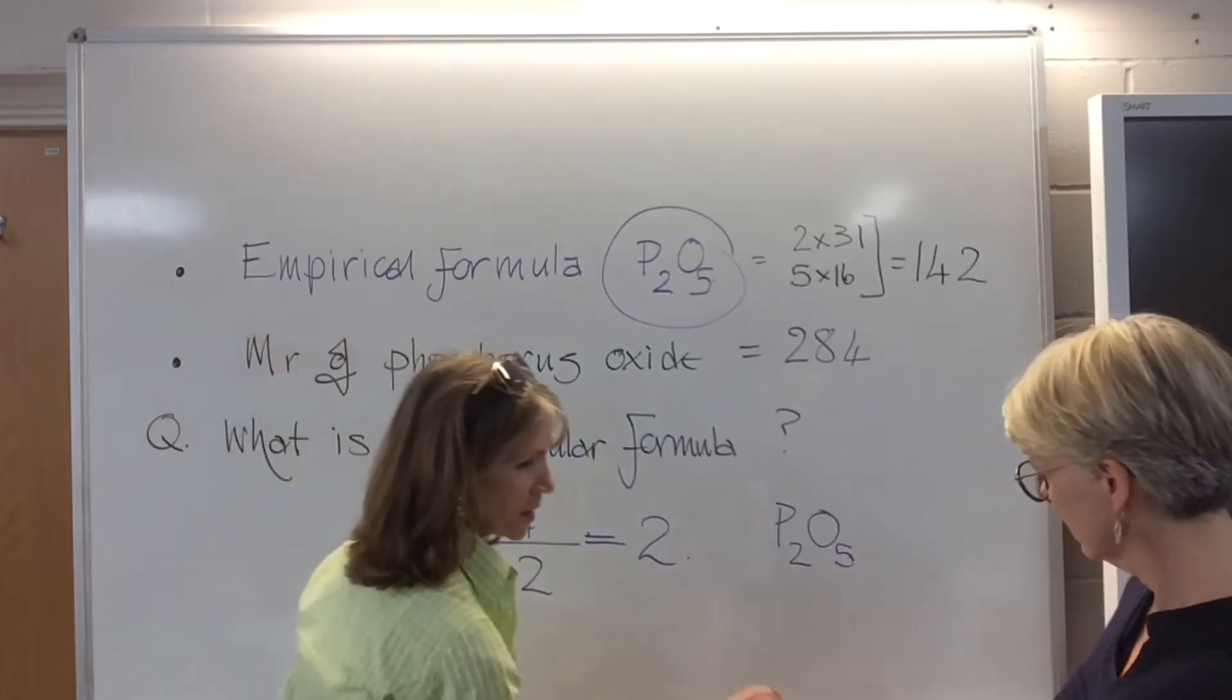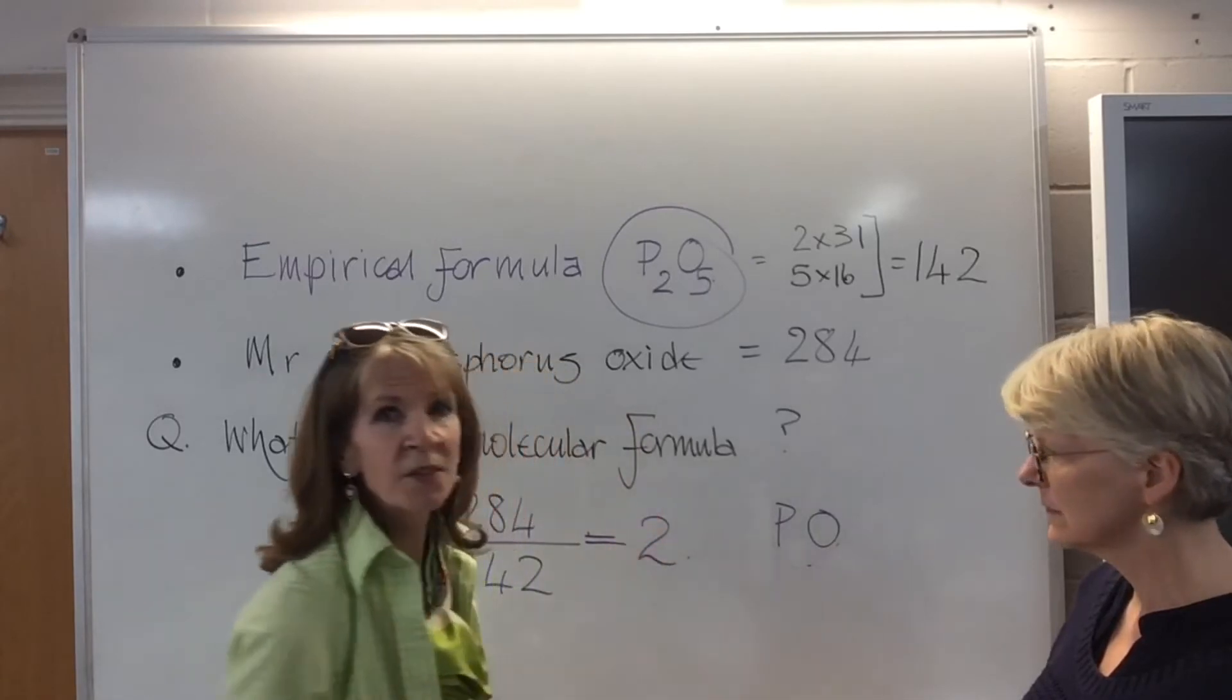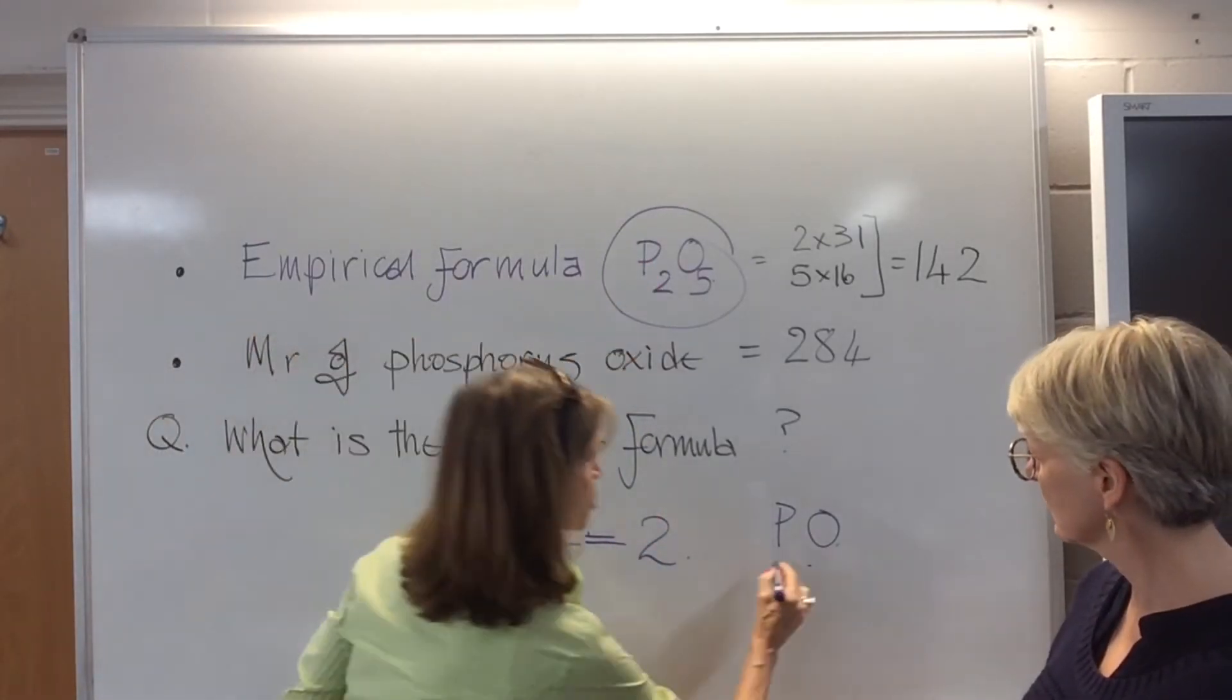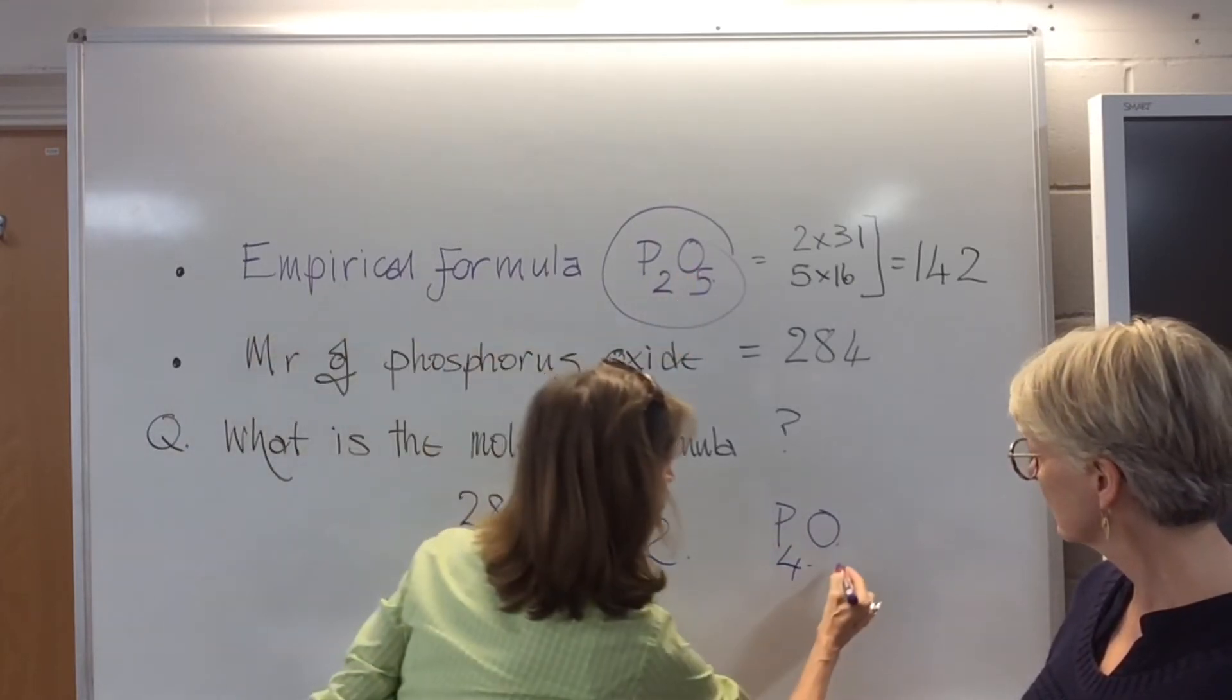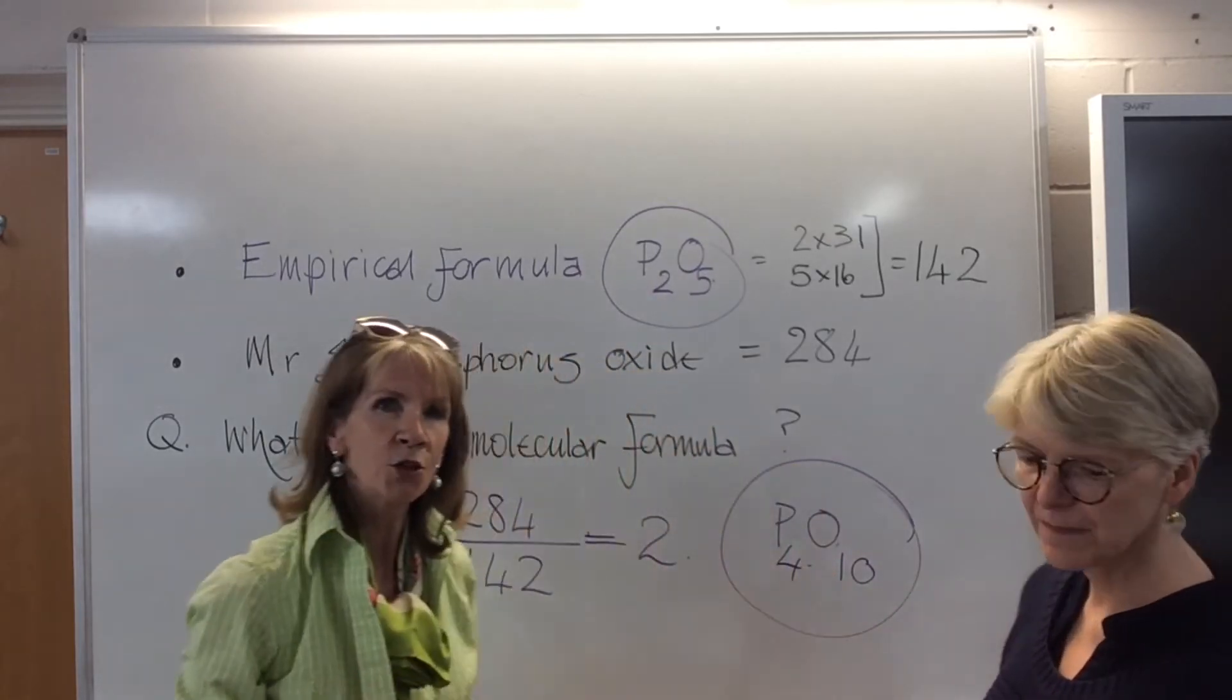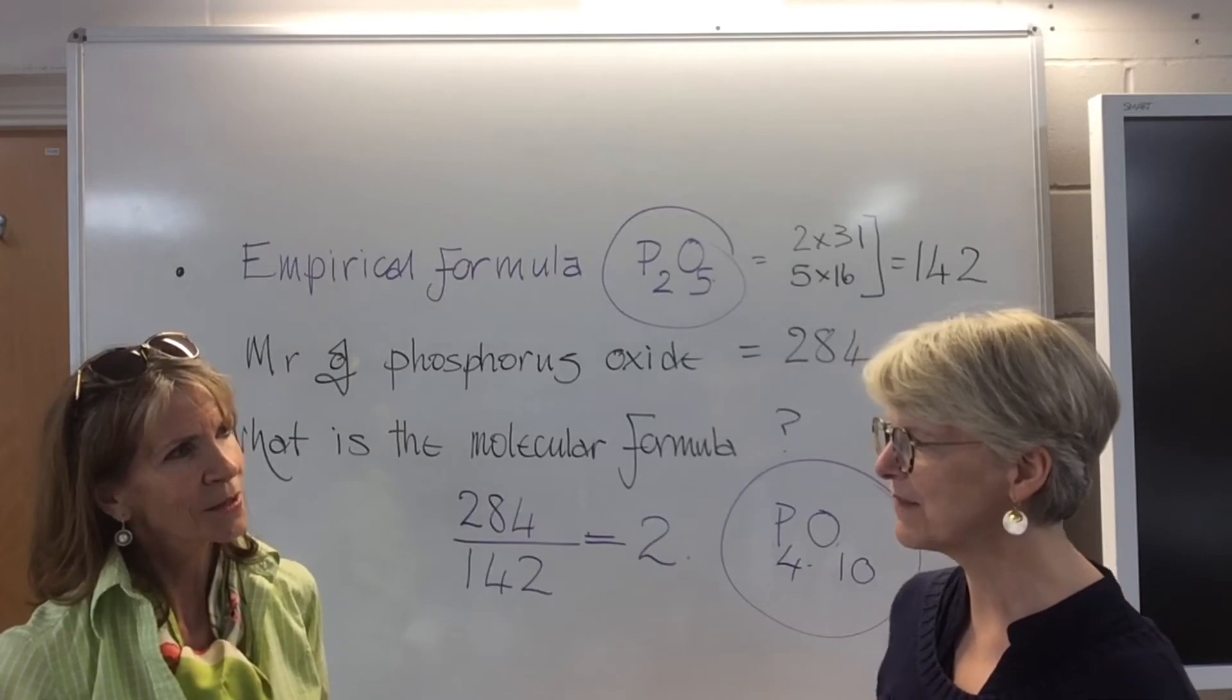All right. Okay. So, that means you multiply everything by 2. So, that would be P2, which means it would be P4. 5 multiplied by 2 gives you 10. So, that is the molecular formula. Absolutely right. Well done, Ms. McLaren. We've done it again.